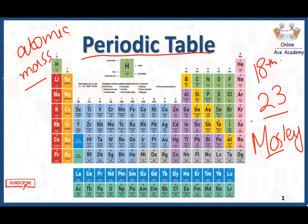The modern periodic table is an important tool in chemistry. If you know the chemical and physical properties of one element in a group, you have an idea about the properties of all other elements in that same group. The periodic table helps you find the reactivity of elements, their position, atomic number, and atomic masses. It also gives you an idea about whether elements can form ionic bonds, covalent bonds, and much more.